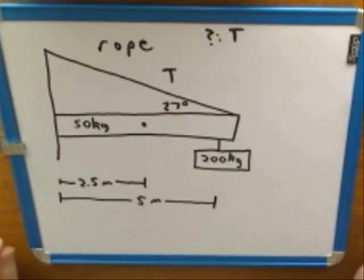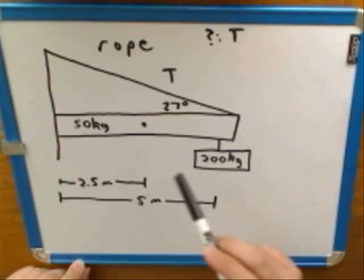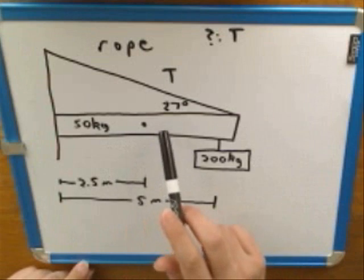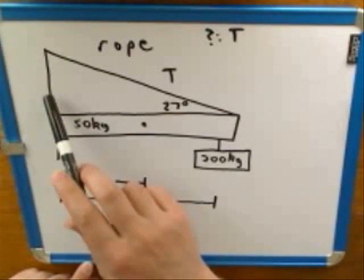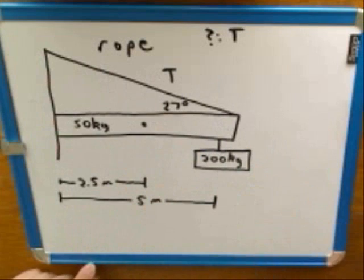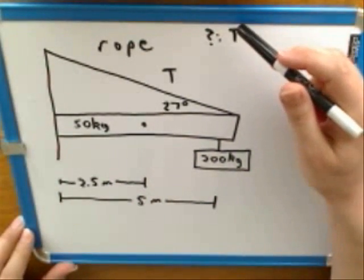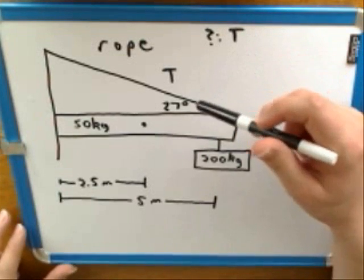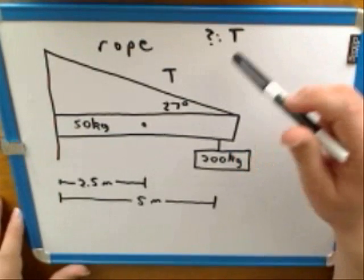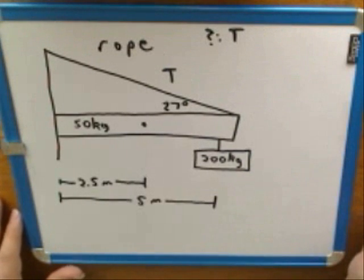So we have a 200-kilogram sign that's hanging from a 50-kilogram boom. The boom is attached to the wall on the left, and it's also supported by a rope. This is a statics problem. The question is: how big does the tension in the rope have to be to keep the whole apparatus static — to keep the whole thing from moving?